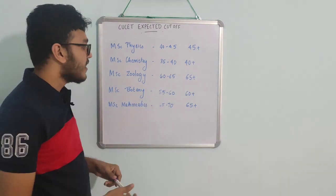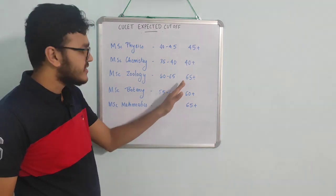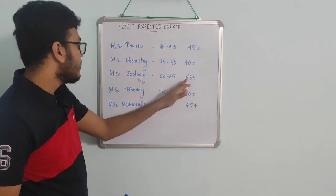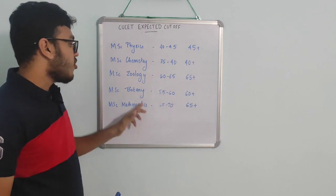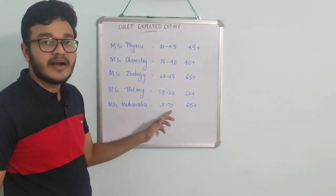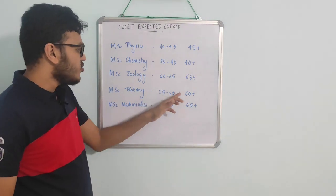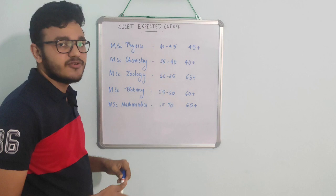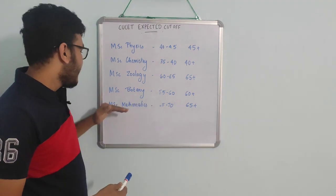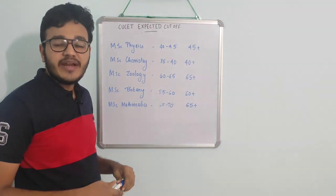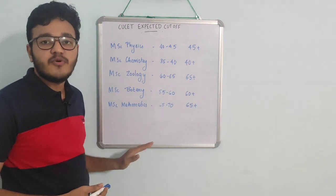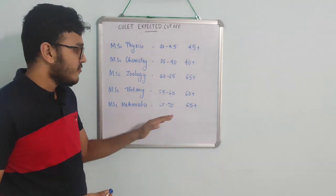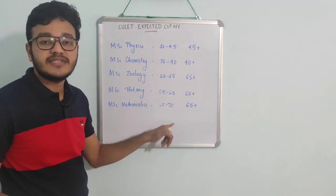If you compare the MSE Botany, you can compare it to 55 to 60. A 60 plus is marked as a safe zone. The first cutoff is in the safe zone.